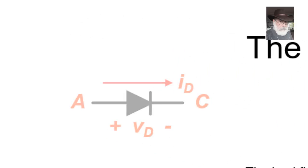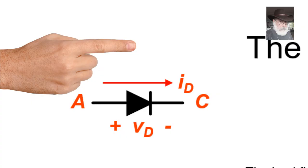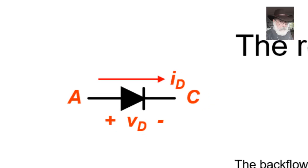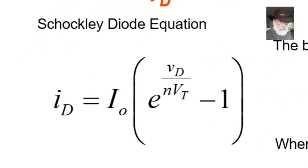The symbol we will use for the real diode is pretty much the same one we had before: anode, cathode. The positive direction of the current is from anode to cathode, and the positive voltage of the diode is when the anode is higher than the cathode. The voltage is V of the anode minus V of the cathode. The relationship in the real diode between I and V is given by this exponential formula, the Shockley diode equation. The relationship is exponential between those two parameters.